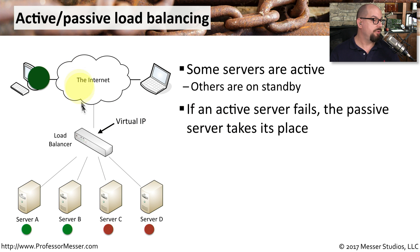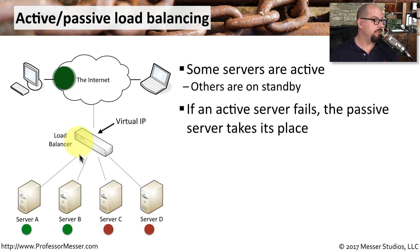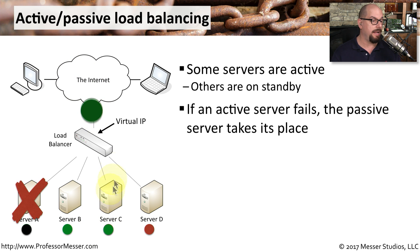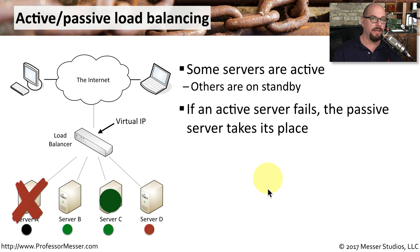For example, a user communicating through the load balancer could have their session assigned to server A, and all traffic from that user will go through the load balancer to server A. If server A fails, the load balancer recognizes that failure, sets that server to be offline, and turns server C on to be available. That way, the user can continue to use that application through the load balancer. The load balancer will have additional servers available to serve that load, and it will wait until server A is back online before allowing traffic to go back to it.